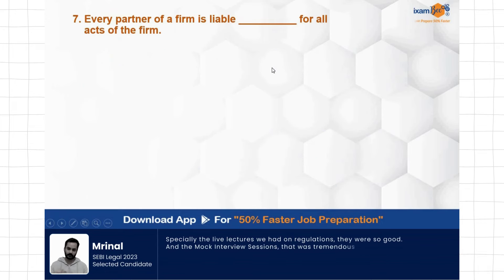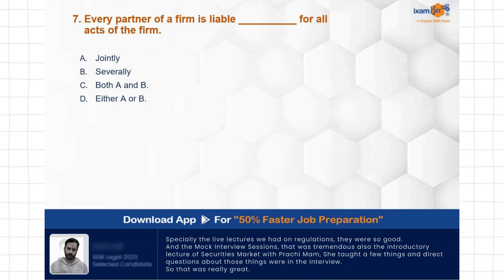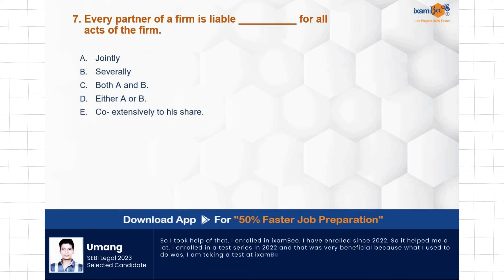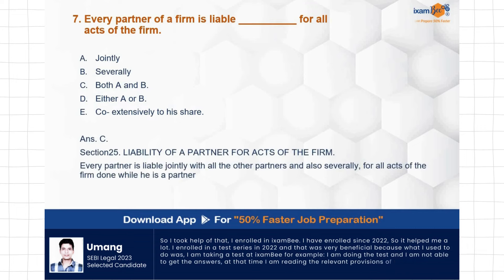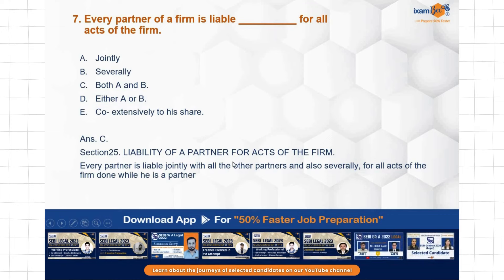Question: Every partner of a firm is liable — blank — for all acts of the firm. What kind is the partner's liability? Options: joint, several, both A and B, either A or B, co-extensively to his share. The correct answer is both A and B — joint as well as several liability exists for partners. Section 25 states that every partner is liable jointly with all other partners and also severally for all acts of the firm done while he is a partner.